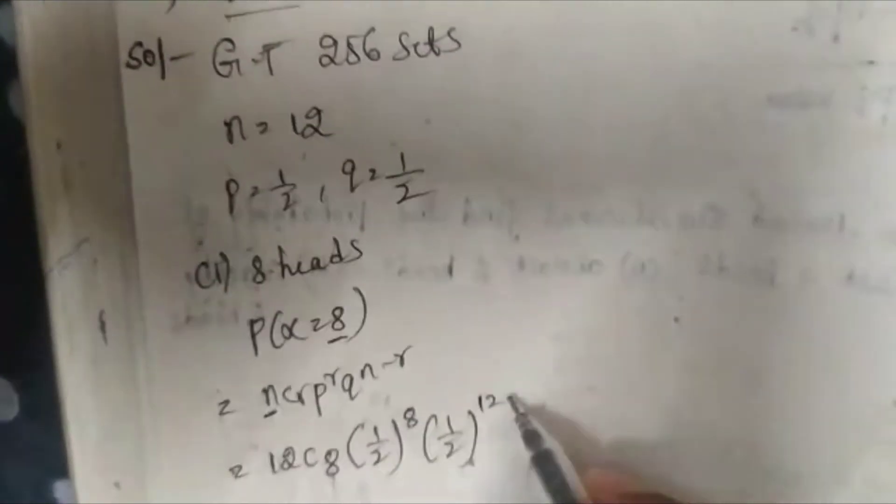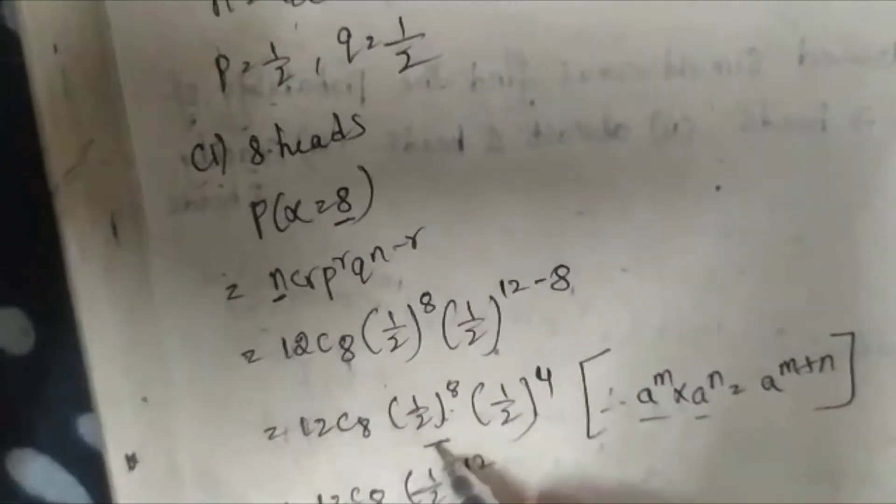We are asked to find the probability of 8 heads, that means P(X = 8). Using the formula nCr * p^r * q^(n-r), with N = 12 and R = 8: 12C8 * (1/2)^8 * (1/2)^(12-8) = 12C8 * (1/2)^8 * (1/2)^4 = 12C8 * (1/2)^12. Using the rule a^m * a^n = a^(m+n), since 8 + 4 = 12.